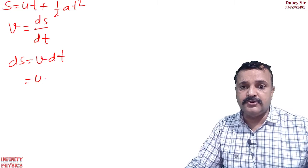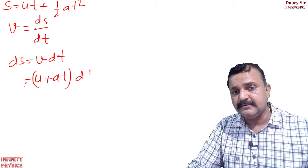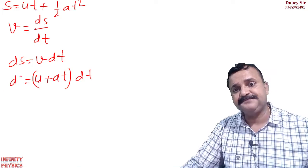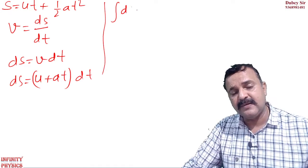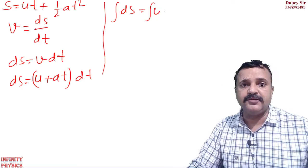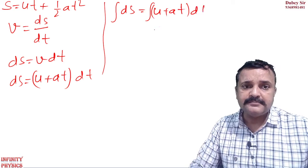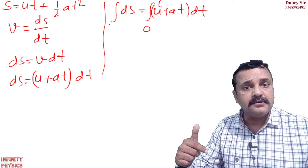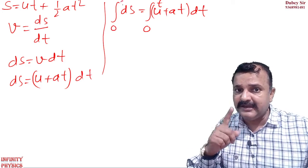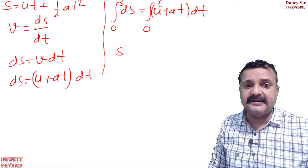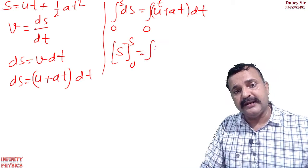Yaa weak jang na sakti ho U plus A T is equal to Ds. Aab isko integrate karna hai. Tho integration kya hoga? Integation of Ds is equal to integration of U plus A T into Dt. Limit kya hoga? Zero se T. Jab zero time hai to distance bhi zero hai. Or T time by displacement hoga s. Ds ka integration kya hoga? S. Aar zero to S. Limit rakh diya.